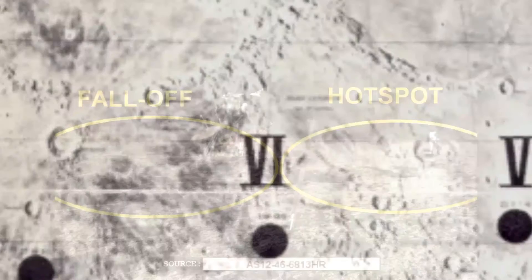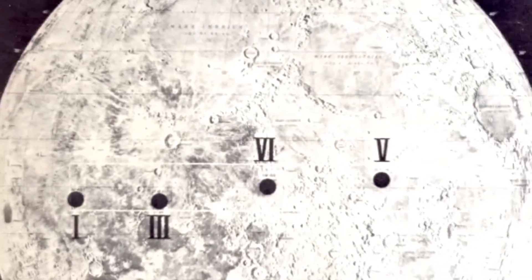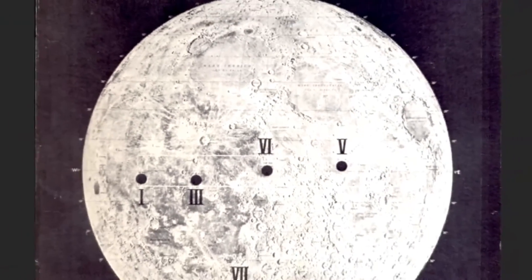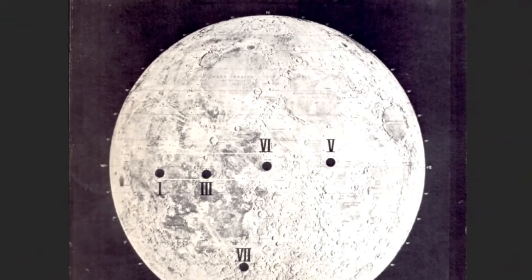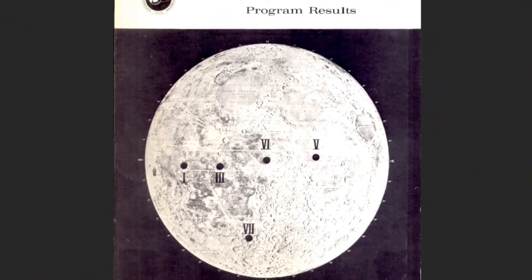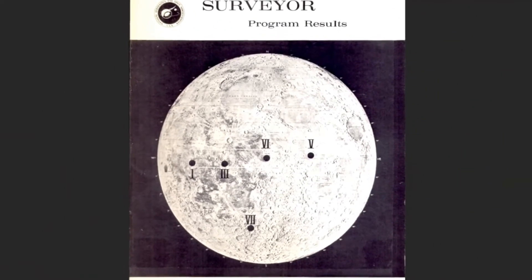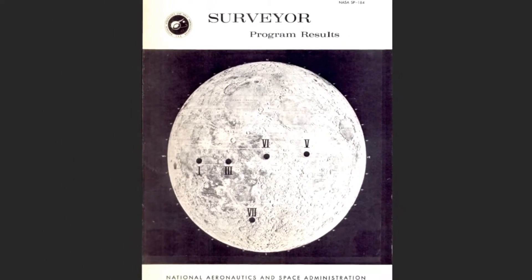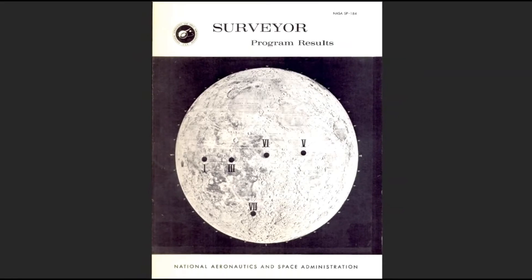Secondly, NASA itself denies the fact that the sand under the surface of the moon is lighter than the one on the surface — it is in fact the exact opposite. In this report on the Surveyor missions published in 1969, NASA wrote...